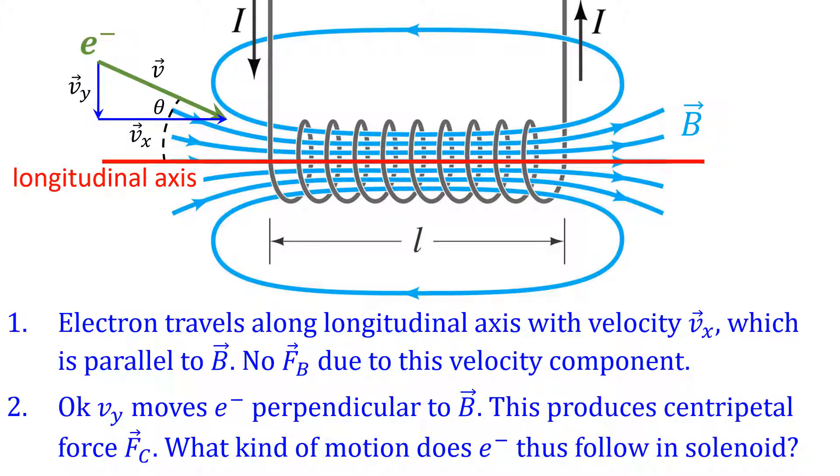The time it takes the electron to go from one end of the solenoid to the other depends on this x-velocity. The electron's y-velocity, which again is perpendicular to the magnetic field, results in the magnetic field exerting a force on the electron.